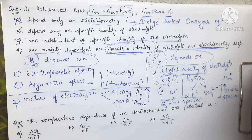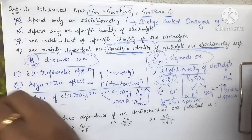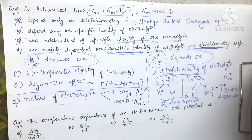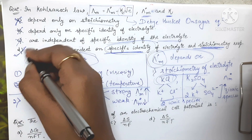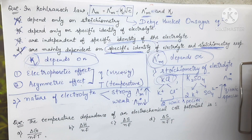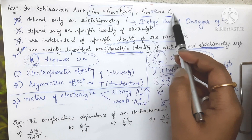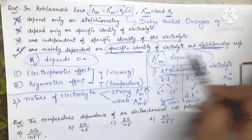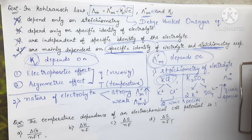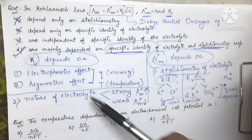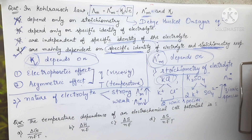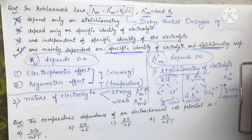Looking at all four options, option D is the correct answer: λ°m and κ are mainly dependent on the specific identity and stoichiometry of the electrolyte. We have discussed all the dependencies of λ°m and κ. That's it for this question; now we move on to the second question.